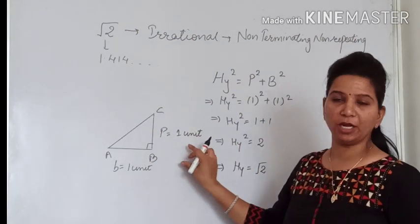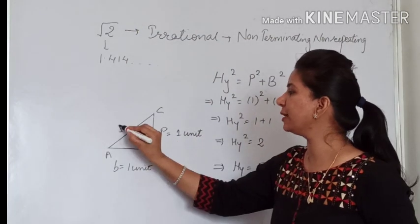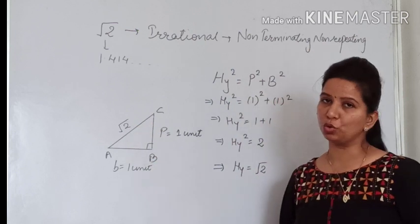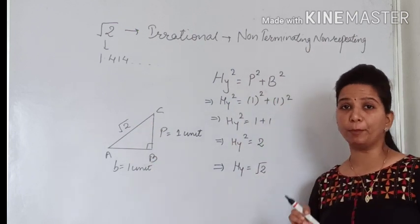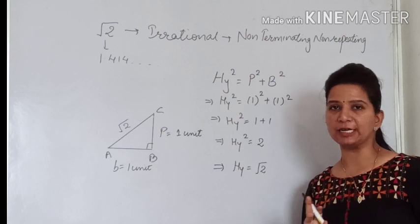That means if perpendicular and base are each 1 unit, then the hypotenuse will be root 2. Now let's see how we represent this on the number line.